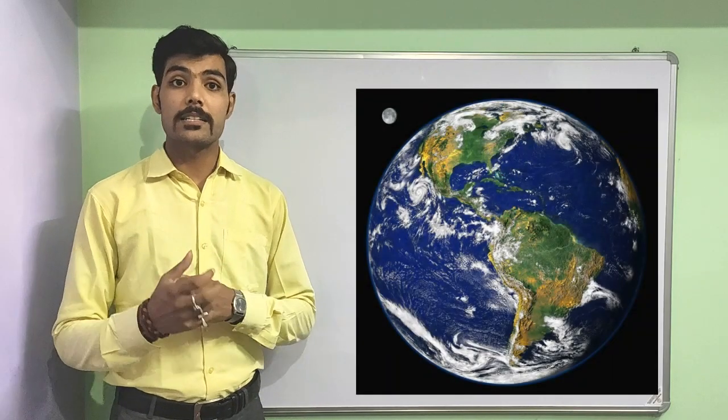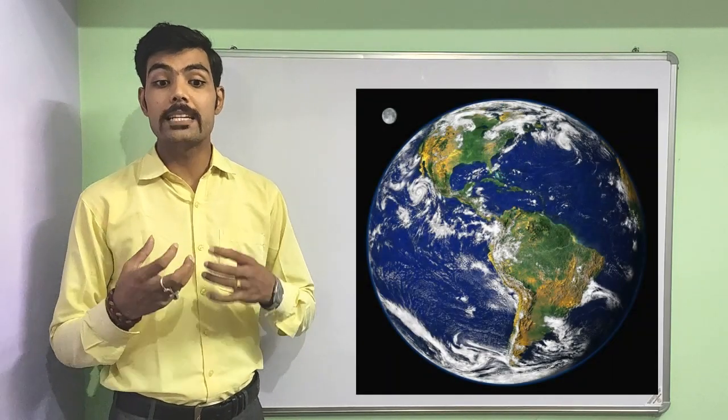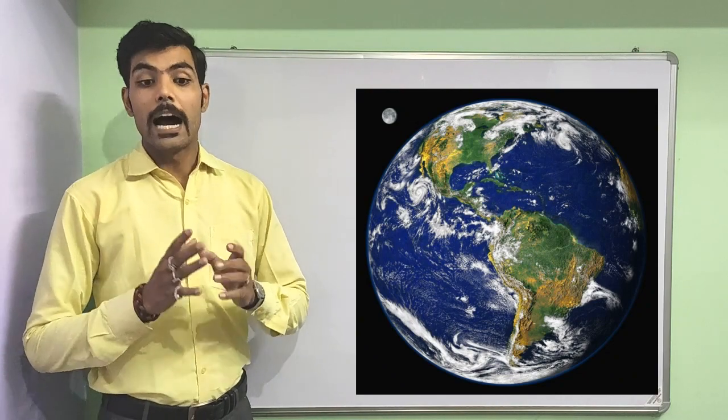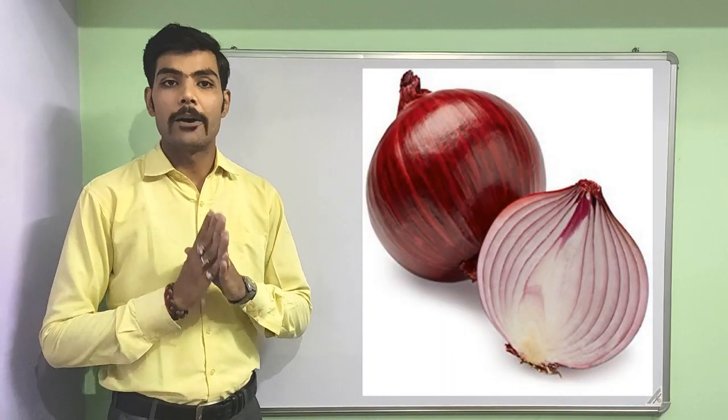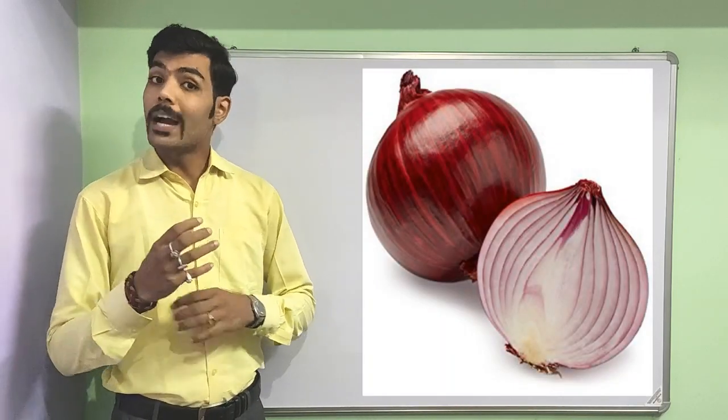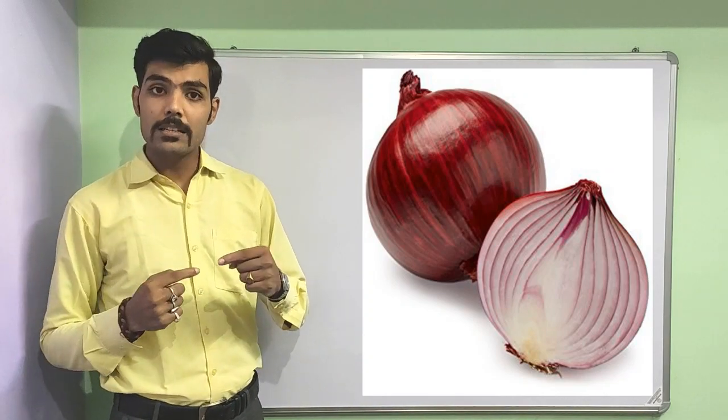Before I start discussing about how our earth is made up of and what is inside our very dynamic planet called Earth, I would like to discuss about the onion. Yes, you heard it right. When you peel the onion, you find there are various concentric layers.